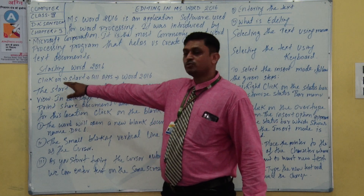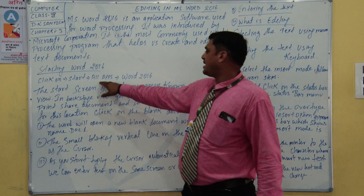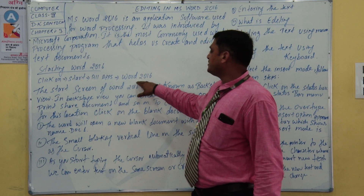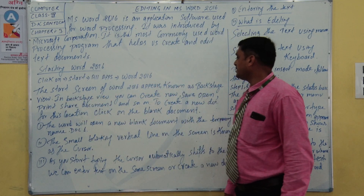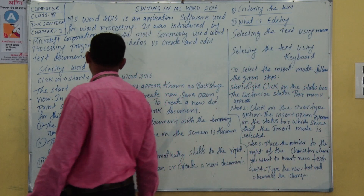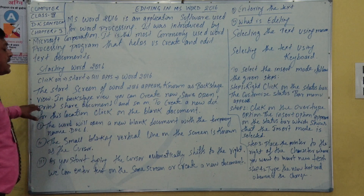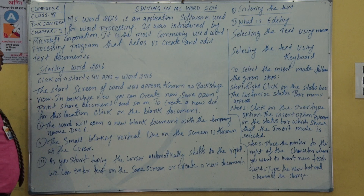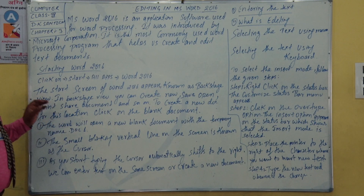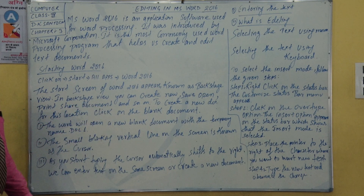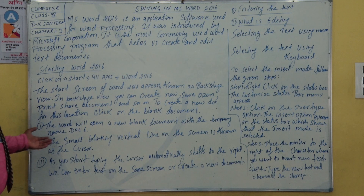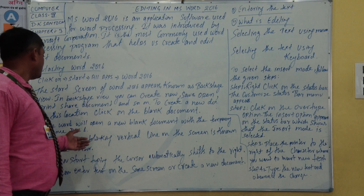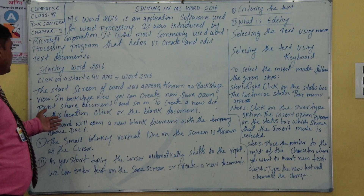The first option to open Word is Start, then All Apps, then Word 2016. The second option also allows you to open Word 2016, where you can share and work on documents.